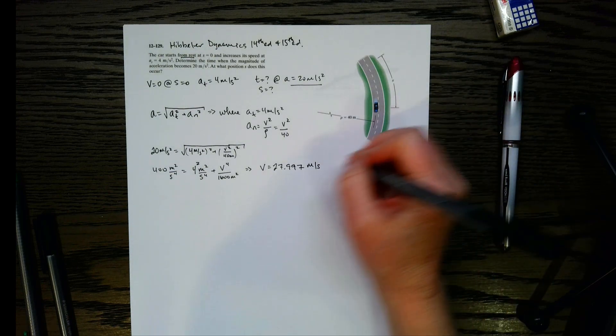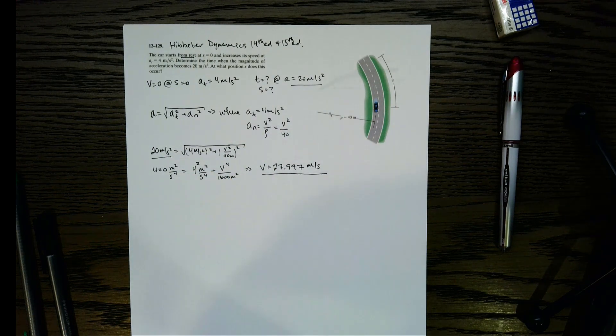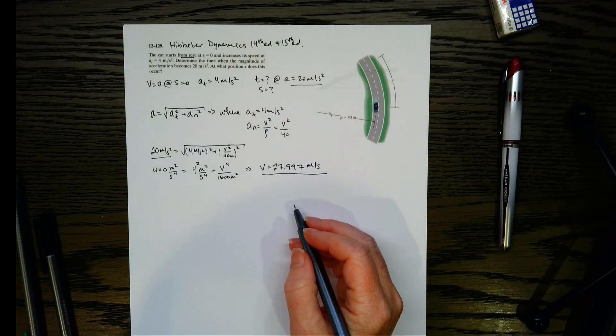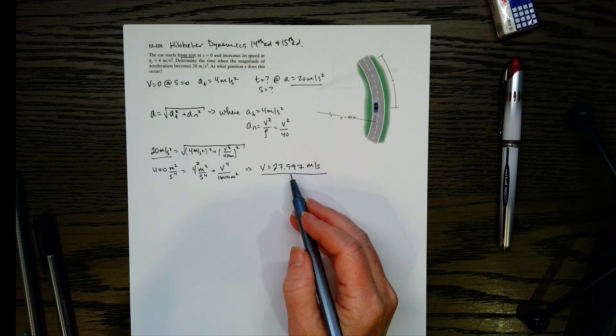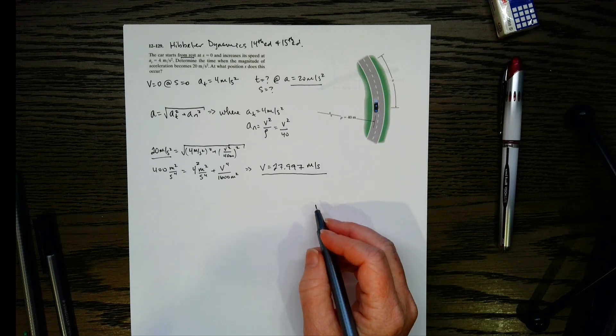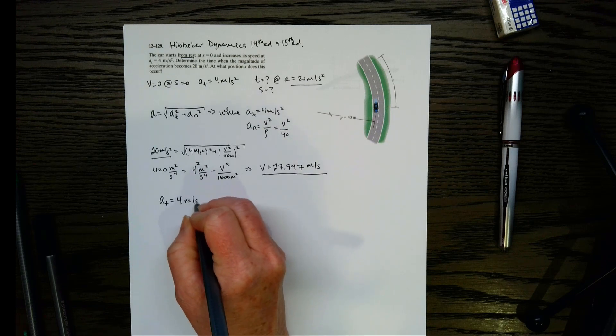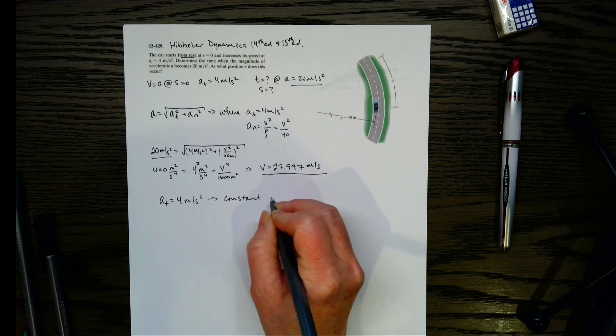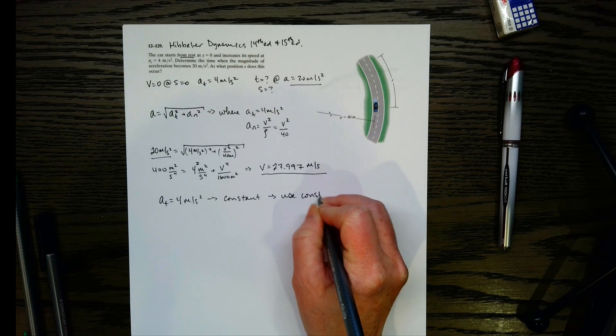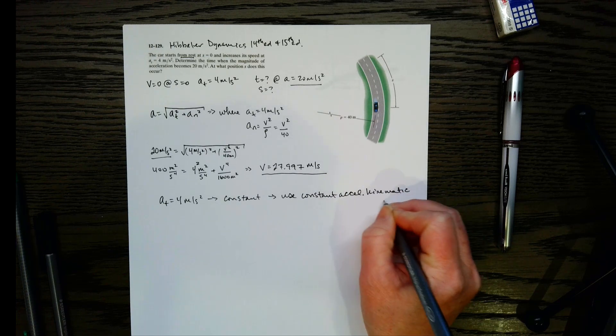So let's look right here at what we know. We've got this v at this point when the magnitude of acceleration is 20. Now we know we started from rest. So if we started from rest at 0, this is going to be my final velocity. And I want time and s. I can go ahead and use my kinematic equations because a sub t is 4, so that's a constant. That means we can use those constant acceleration kinematic equations.